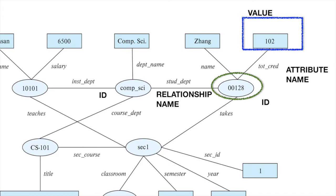Going back to what table we would create in the relational setting — you need to account for the binary relationship type, which is one-to-many: one department to many students. For the student table, we would create a department column to represent the relationship. But in the RDF case, we just specify a link between comp_sci and 00128, with the predicate being the student_department relationship.